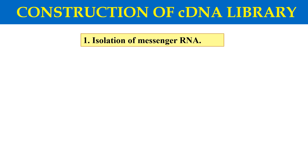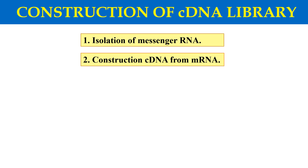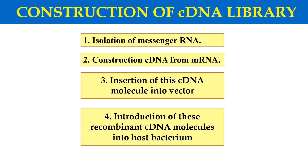What are the steps of the construction of this cDNA library? The first step is isolation of messenger RNA, because when you want to make the cDNA library, you have to isolate the messenger RNA from that particular organism — not the DNA, messenger RNA — because these libraries only contain the coding sequence of that particular organism. So now let's discuss all these steps one by one.